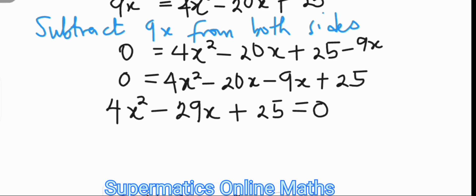And we then try to factor 4x squared minus 29x plus 25 equals 0. But this time around, we will be using the slide and divide method.